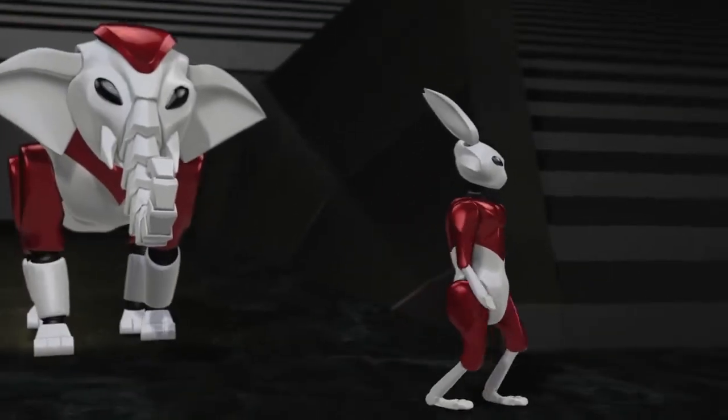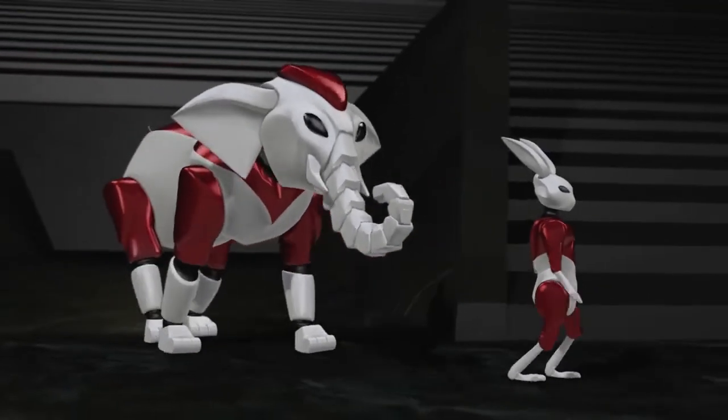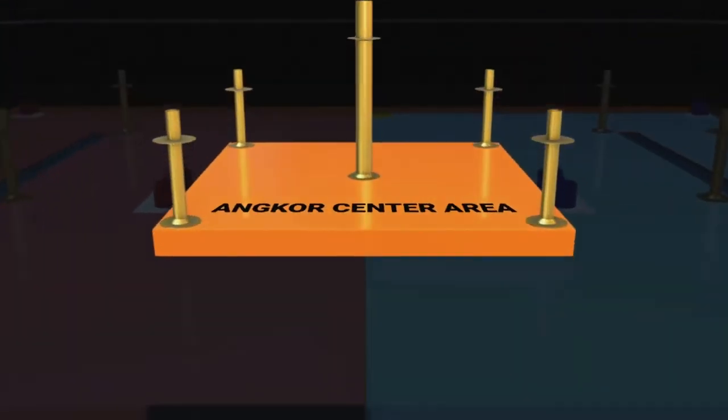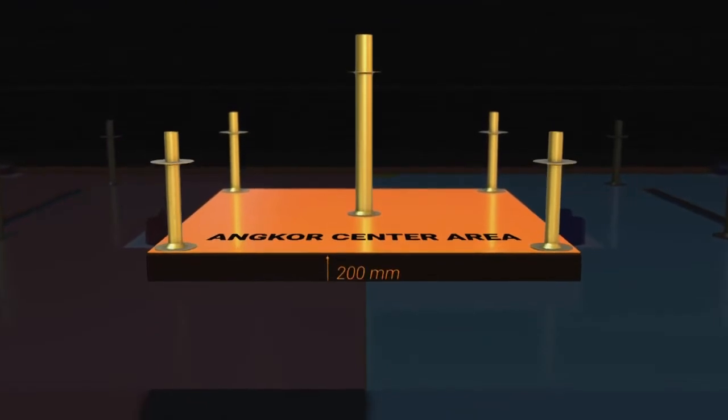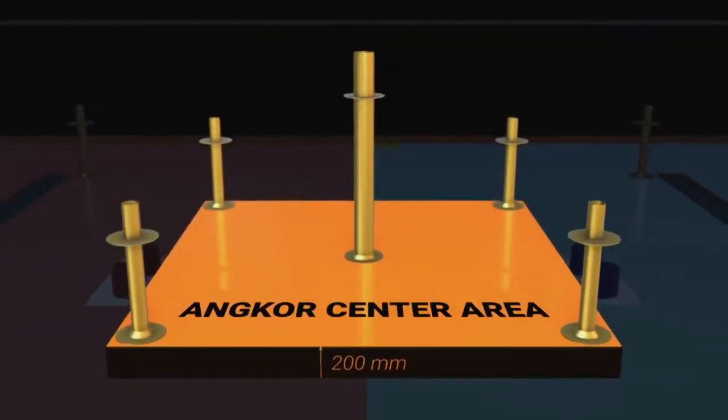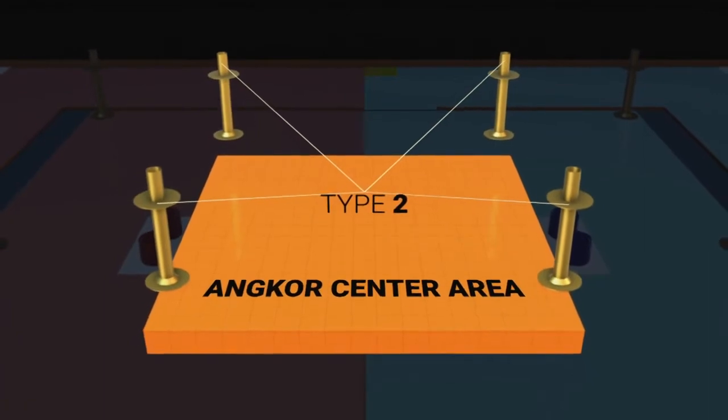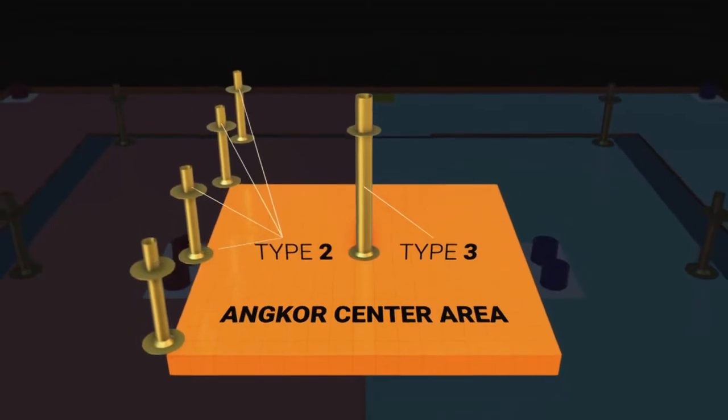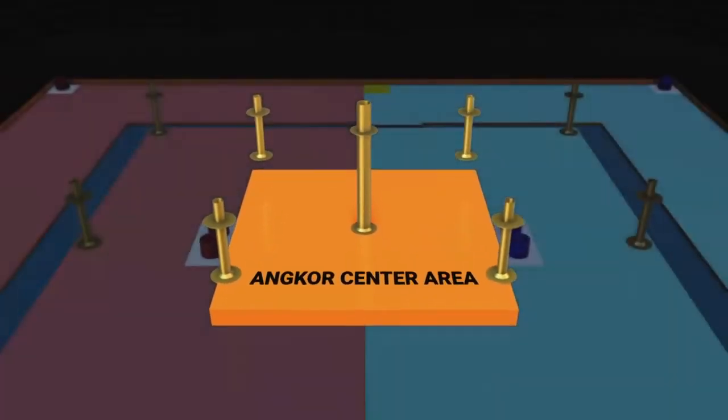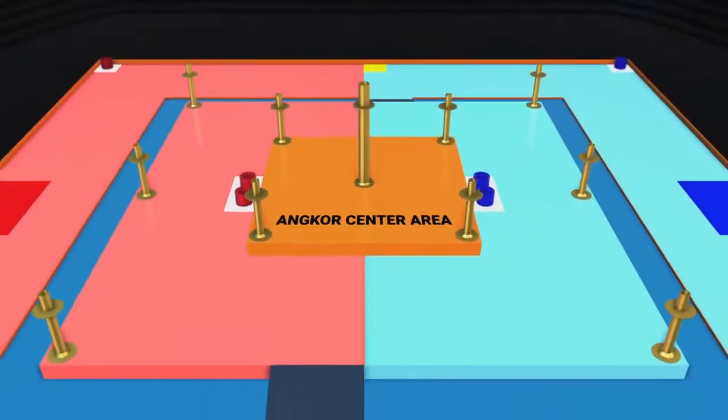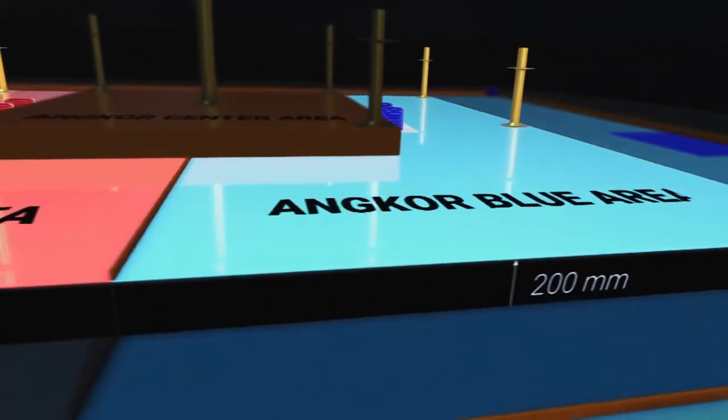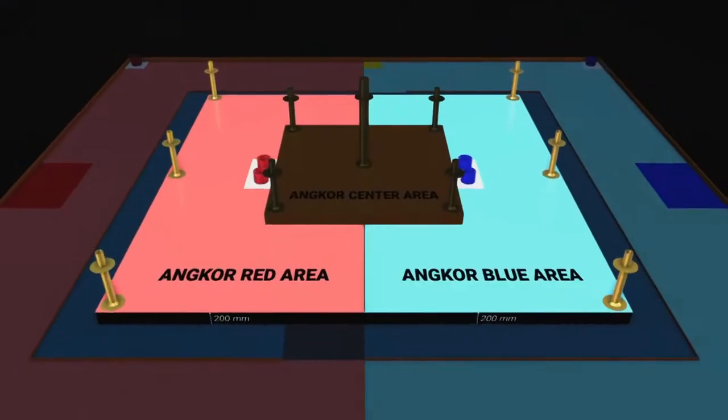The game field has Angkor Center area in the middle, which is raised 200mm from Angkor-1 area. There are four poles, which are Type 2 poles inside the corner of the Angkor Center area and one pole, which is Type 3 in the middle of Angkor Center area. The Angkor Center area is surrounded by Angkor Red area and Angkor Blue area, which is raised by 200mm from the field.